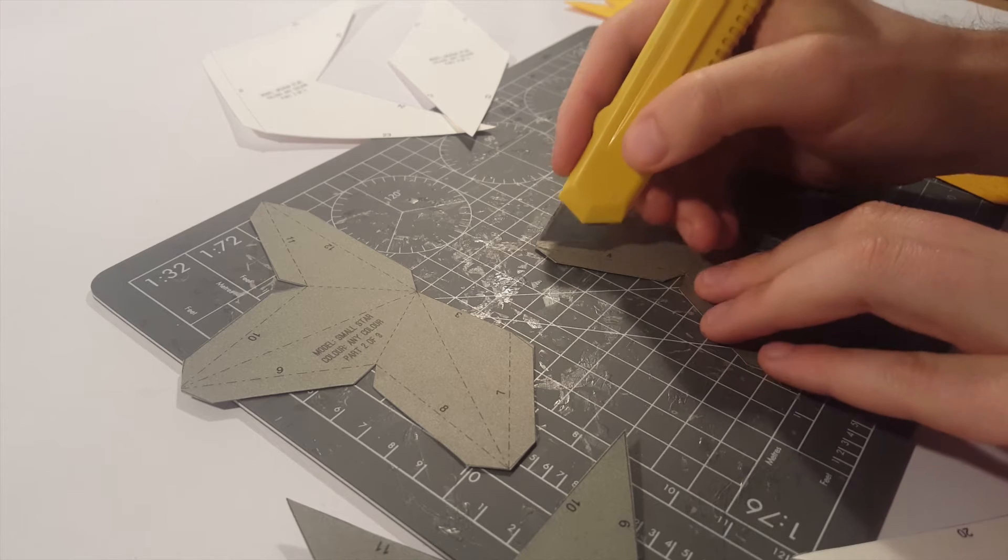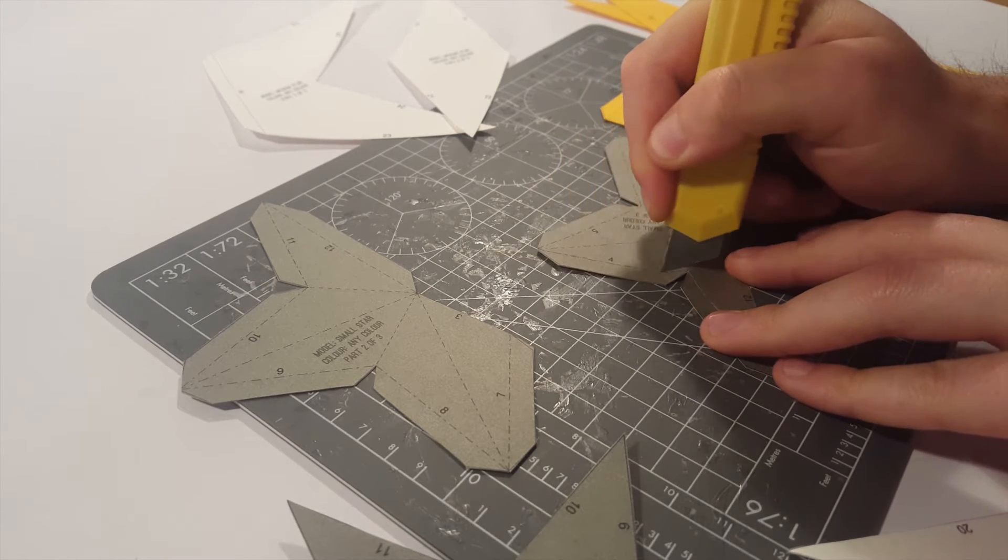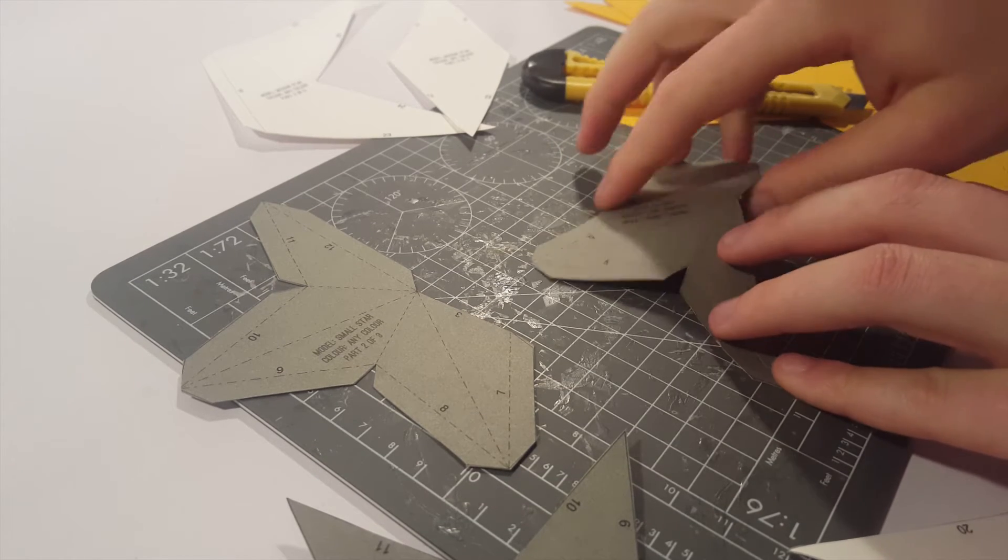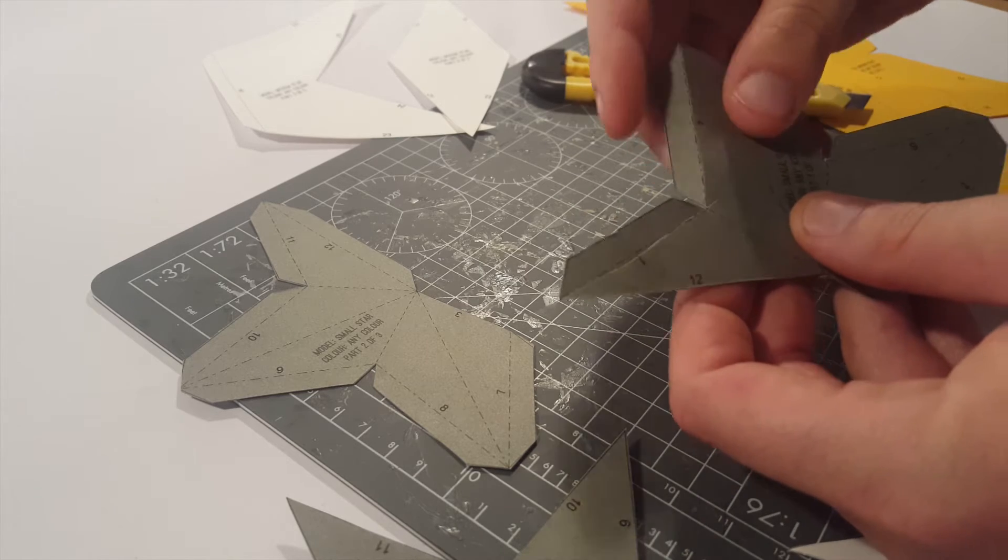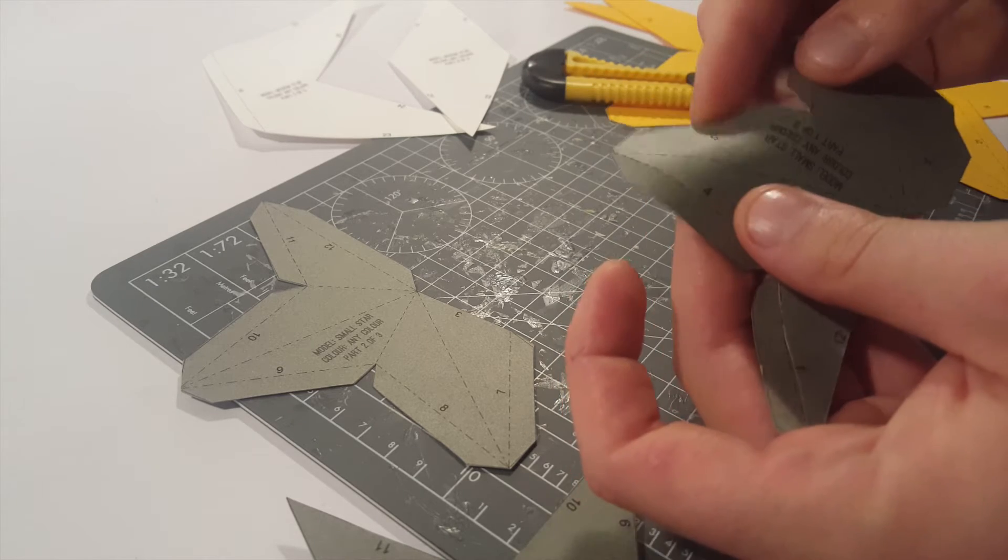So all you do is get a dotted line like that, and just follow it down there. So you can bend the card instead of just folding it like that, which isn't great.